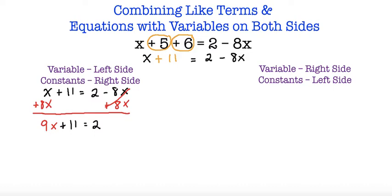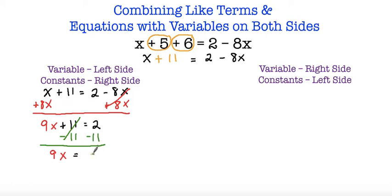Now I'm going to move all constants to the right side, so I have to subtract both sides by 11. These are opposites so they cancel out, and I end up with 9x is equal to positive 2 and negative 11. Since signs are opposites I subtract: 11 minus 2, and I keep the sign of the number with the greatest absolute value which is negative, so I end up with negative 9. So 9x is equal to negative 9. To get x by itself I divide both sides by 9, so x is equal to negative 9 divided by 9, which is negative 1.